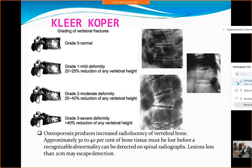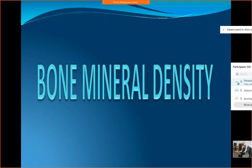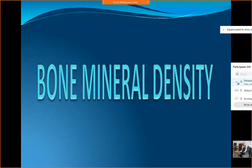You can see how the bone appears osteopenic, the cortex becomes pencil-like and thinned. You can see the margins of the vertebra on the right side of the slide. This is how the picture on X-ray may appear in such patients. Another diagnostic tool is bone mineral density.